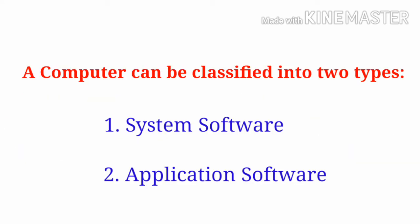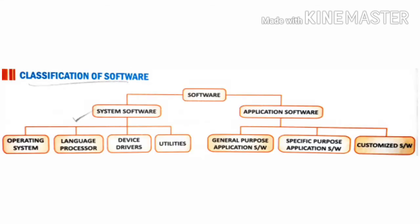A software can be classified into two types: System Software and Application Software.